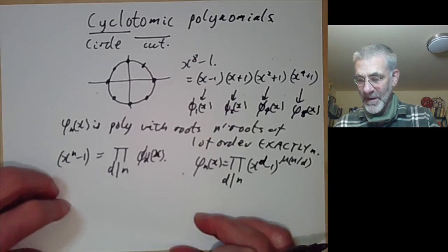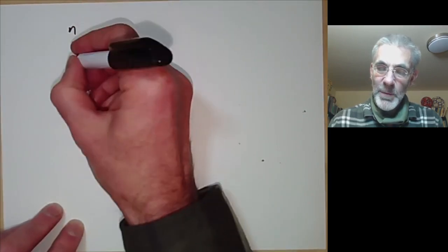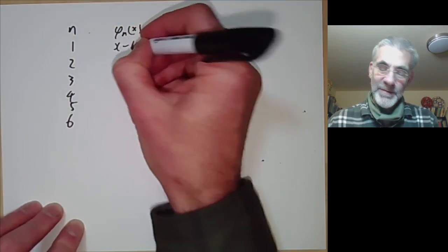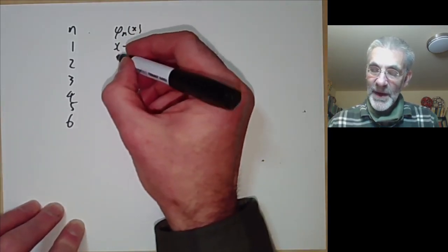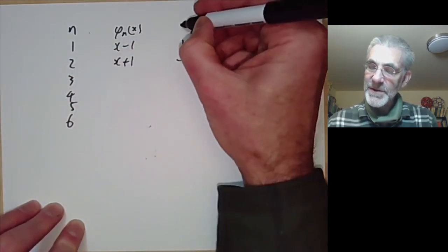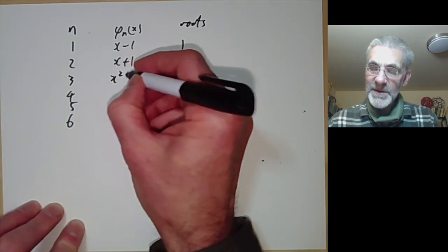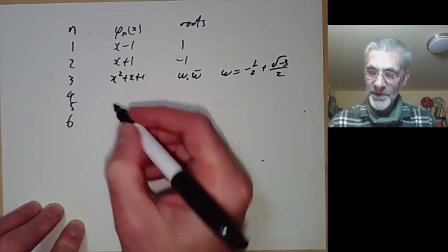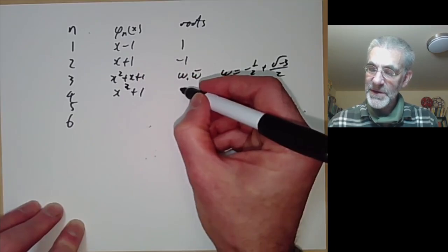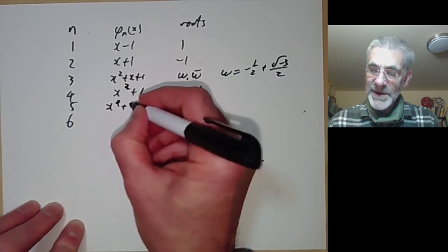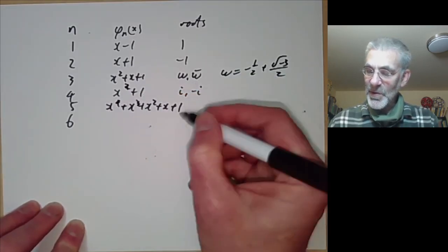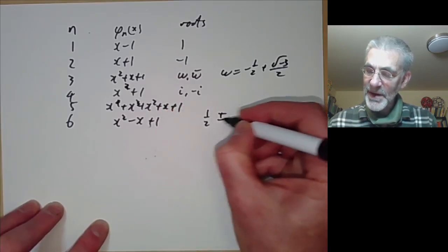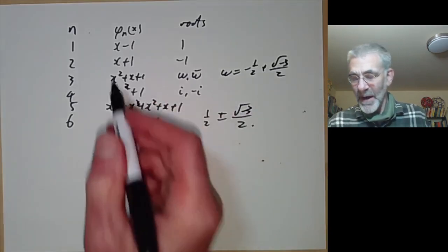So let's work out a few of them just to see what they look like. For n=1, this only has 1 root, which is 1. For n=2, the only proper square root of 1 is minus 1. For n=3, we have x^2 + x + 1, and the roots are ω and ω-bar, where ω is -1/2 + √(-3)/2. For n=4, we have x^2 + 1, with roots i and -i. For n=5, we have x^4 + x^3 + x^2 + x + 1, with roots being the fifth roots of 1. And for n=6, we get x^2 - x + 1, with roots 1/2 ± √(-3)/2.